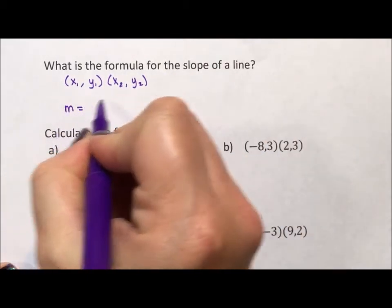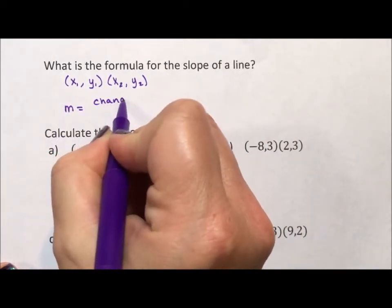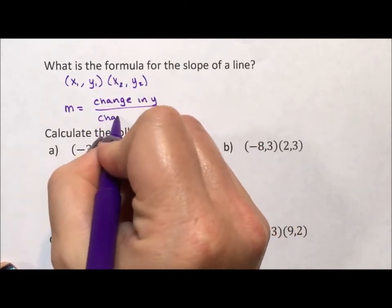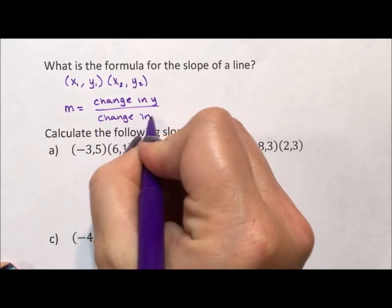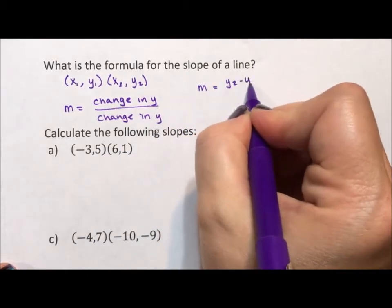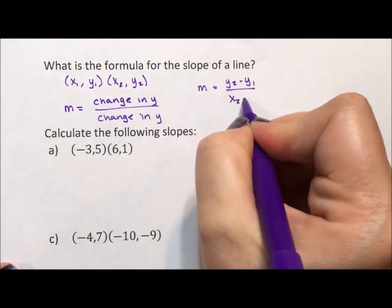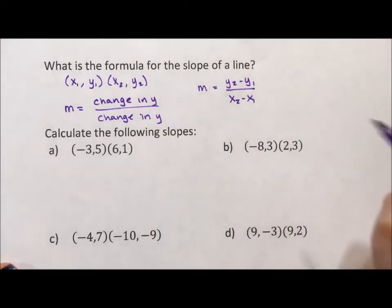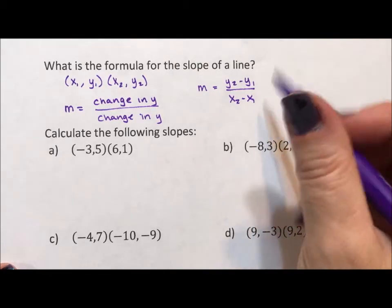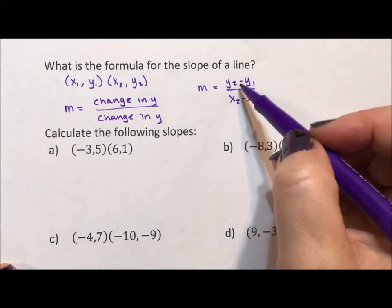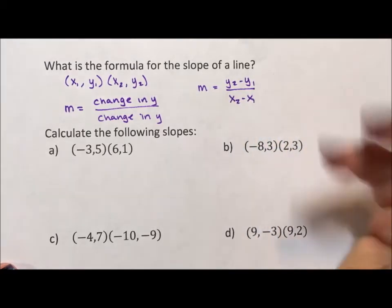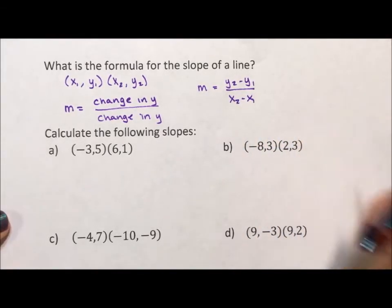Slope is change in y over change in x and change means difference, so slope is y sub 2 minus y sub 1 all over x sub 2 minus x sub 1. Now, if you don't have that memorized, you can sing it to row your boat. Slope is y sub 2 minus y sub 1 all over x sub 2 minus x sub 1. Alright, so let's practice this.